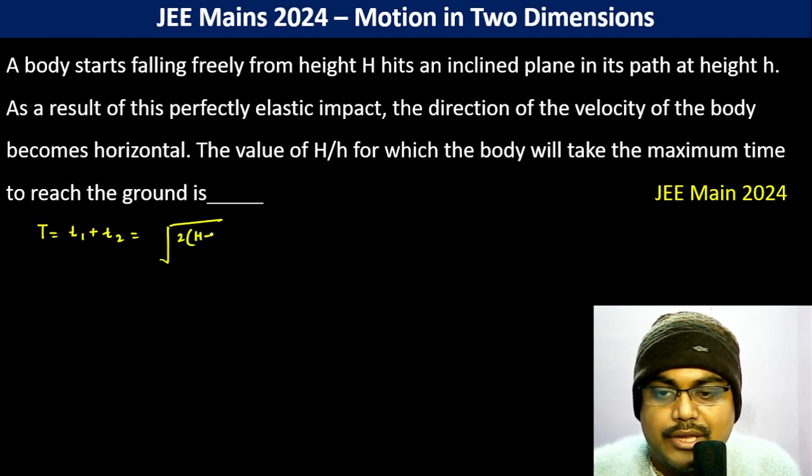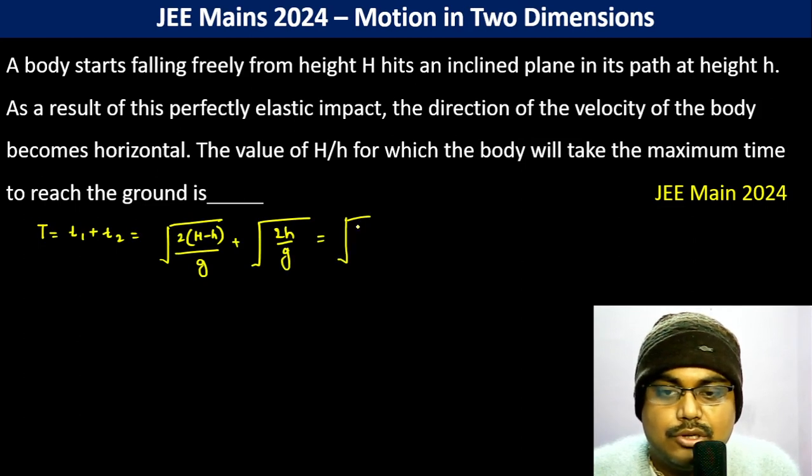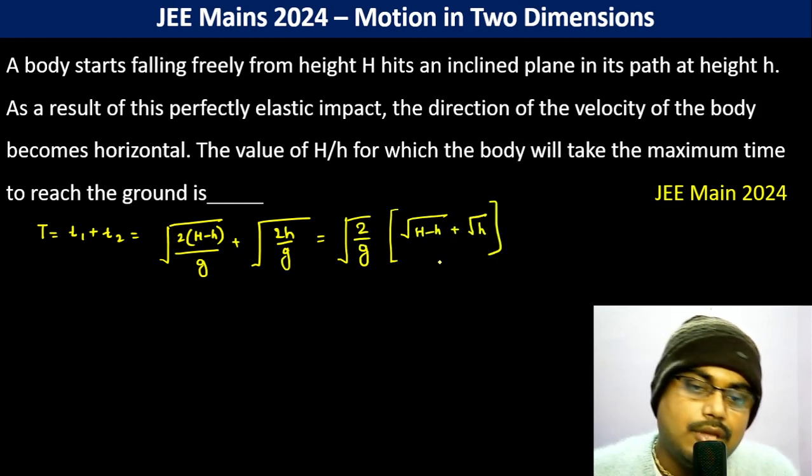So total time is T1 plus T2 which is root over 2 h minus h by g plus root over 2 h by g, which becomes root over 2 by g times root h minus h plus root h. Now this has to be maximum.